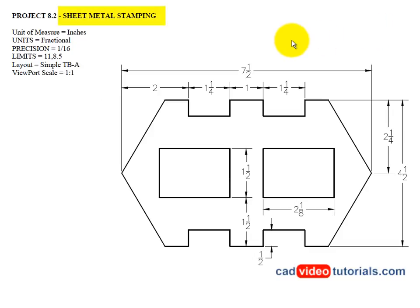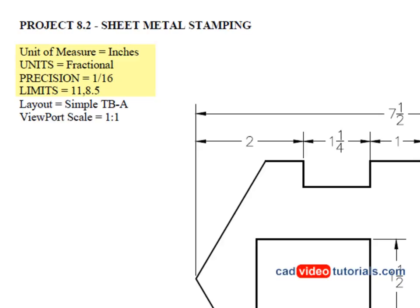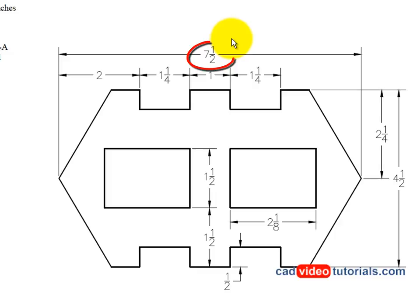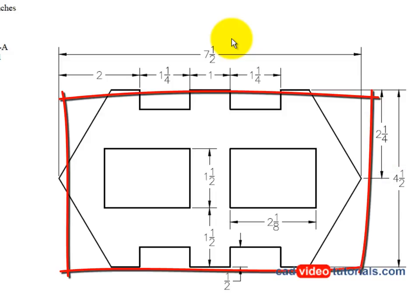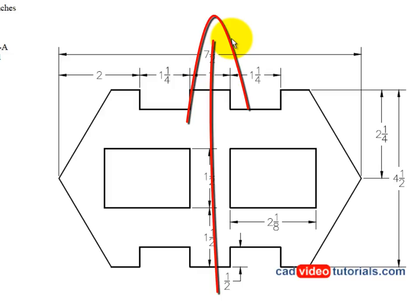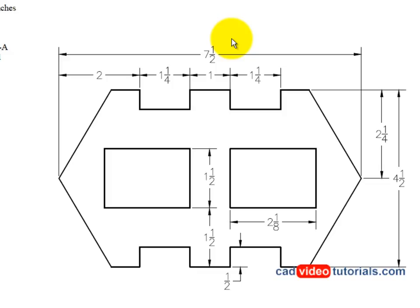In this project, we're going to be drawing this object called a sheet metal stamping. The measurements are in inches, the units are fractional, the precision is to 1/16th of an inch, and the limits will be set to 11 by 8.5. The overall length is 7.5 and the overall height is 4.5. The object is symmetrical — the internal rectangles and notches are all equidistant from a center line, which will allow me to use Mirror for replicating information in my drawing.